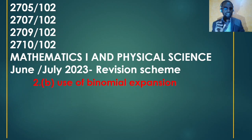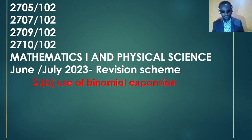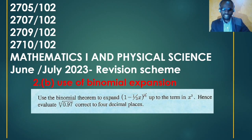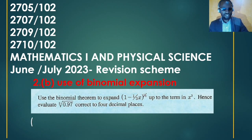We are on question number 2(b), where we are asked to expand using binomial expansion. The topic is binomial expansion. The question asks: use the binomial theorem to expand (1 - x/3) raised to the power of 1/3, up to the term x raised to power three. Hence evaluate the cube root of 0.97 correct to four decimal places.